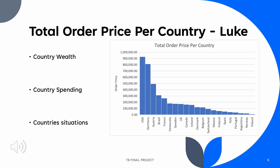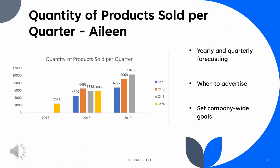This graphic tells us the quantity of products sold per quarter, and since it is broken up this way, we can also analyze the yearly products sold. From 2017 to 2019, quantities have increased steadily. There is a small drop in the latter half of 2018 quantities, but it was quickly recovered in 2019.